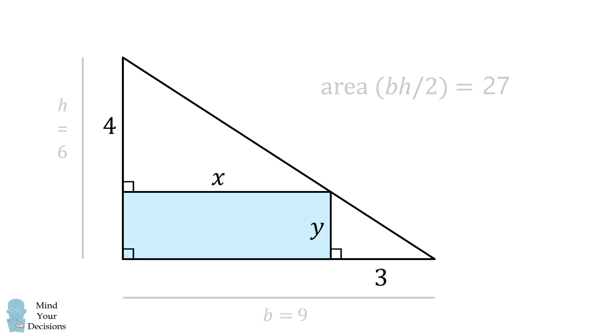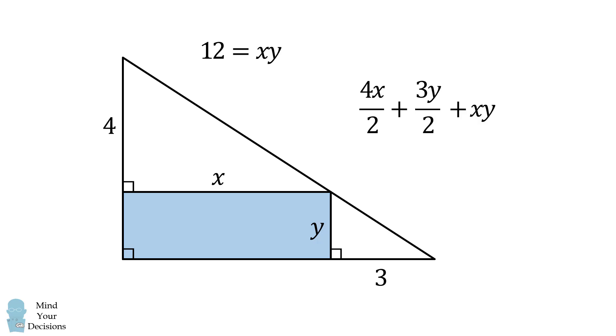First, we will write an expression for the area of this large triangle. It'll be equal to the sum of the following three areas. One area is the area of this right triangle. This right triangle has an area that's equal to 4X over 2. We then add the area of this triangle, which is equal to 3Y over 2. Finally, we add the area of this rectangle, which is equal to X times Y. We already solved that X times Y is equal to 12, so we can substitute that in.